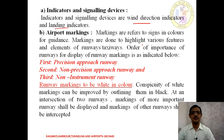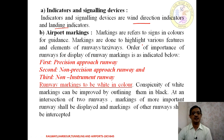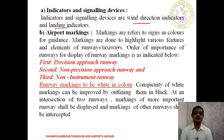Markings are displayed with three priorities for runways: first is the precision approach runway, second is the non-precision approach, and third is the non-instrumental runway. Wherever marking is done on the runway, it is always done in white color.